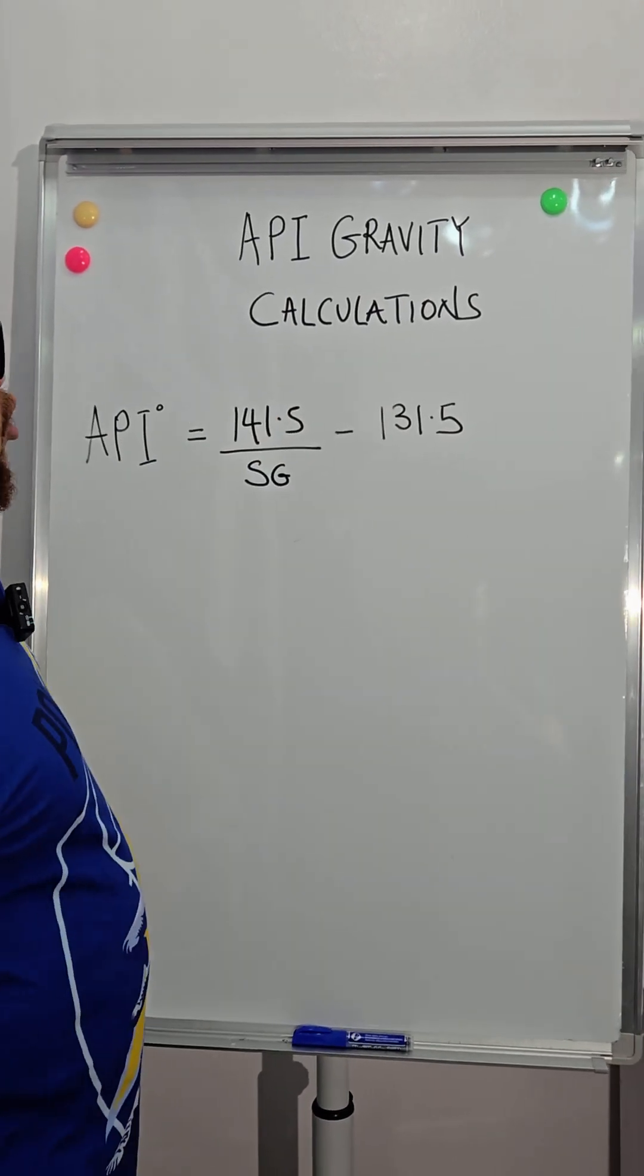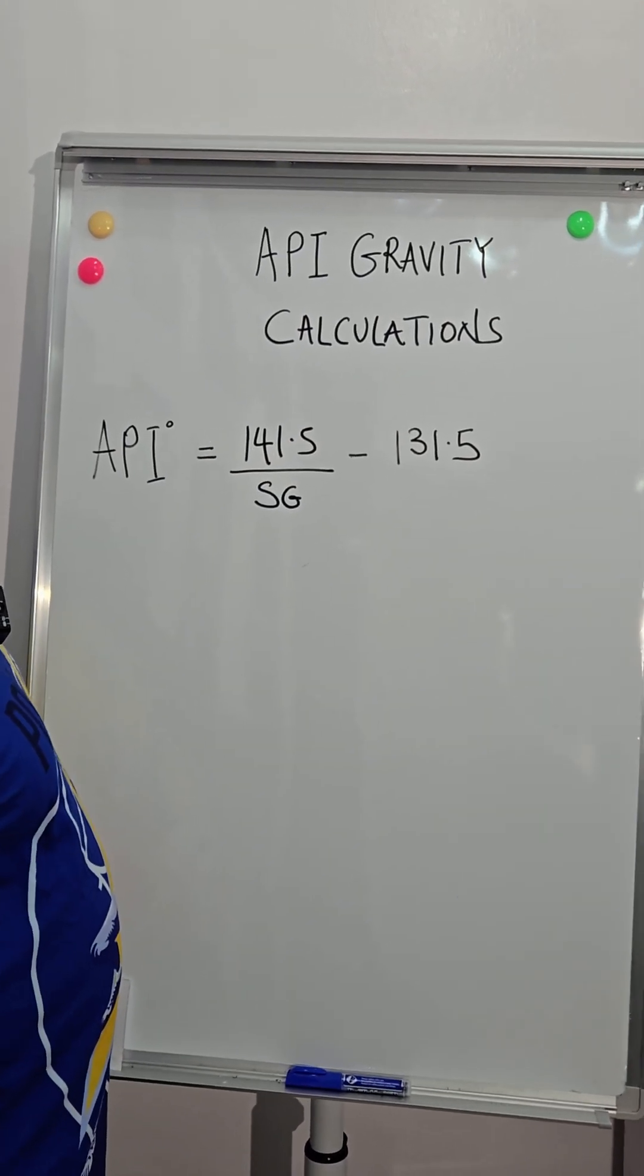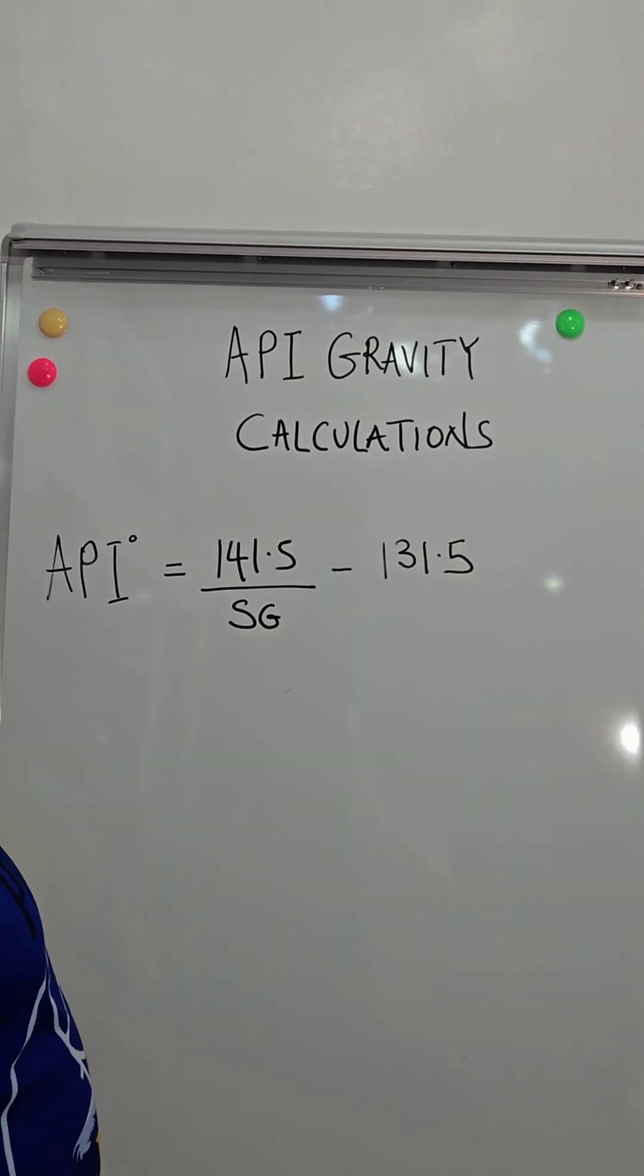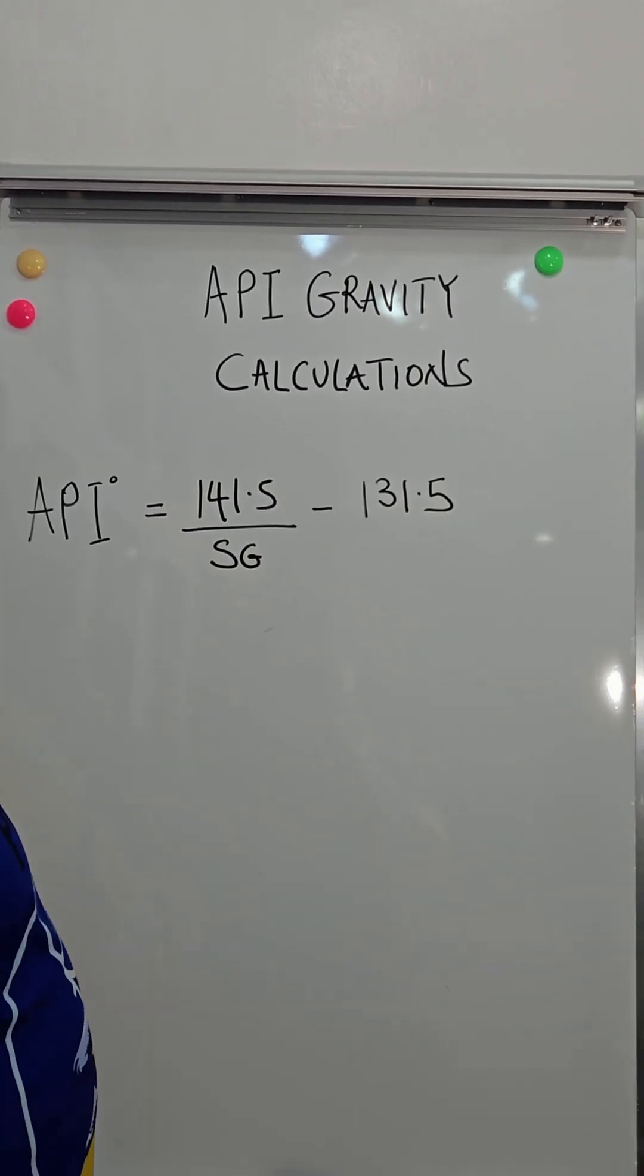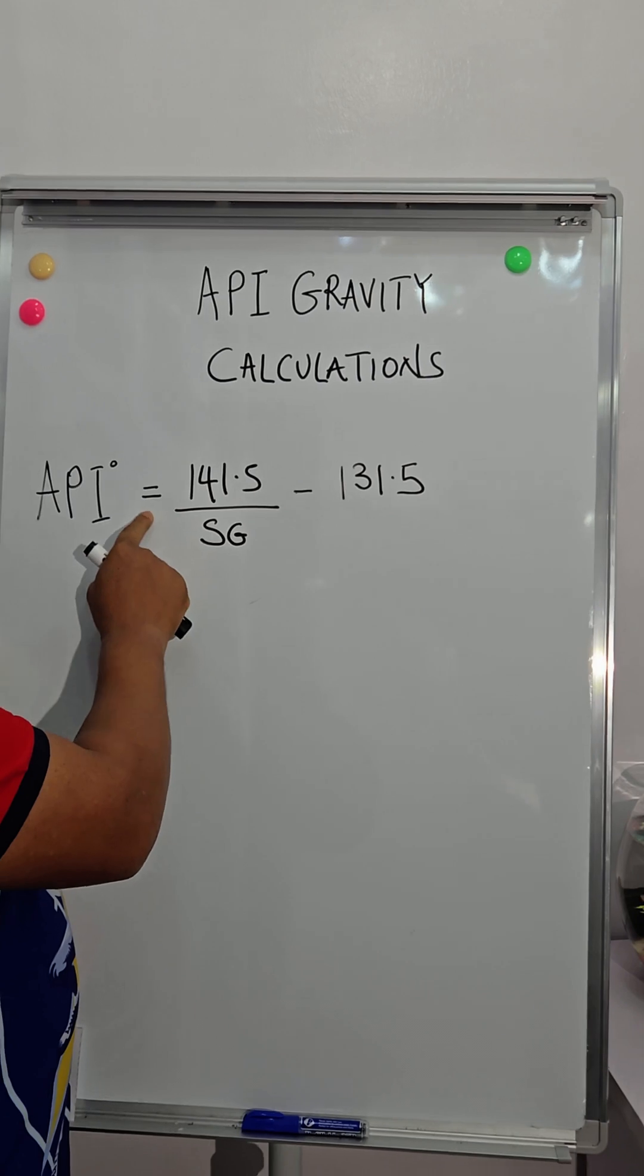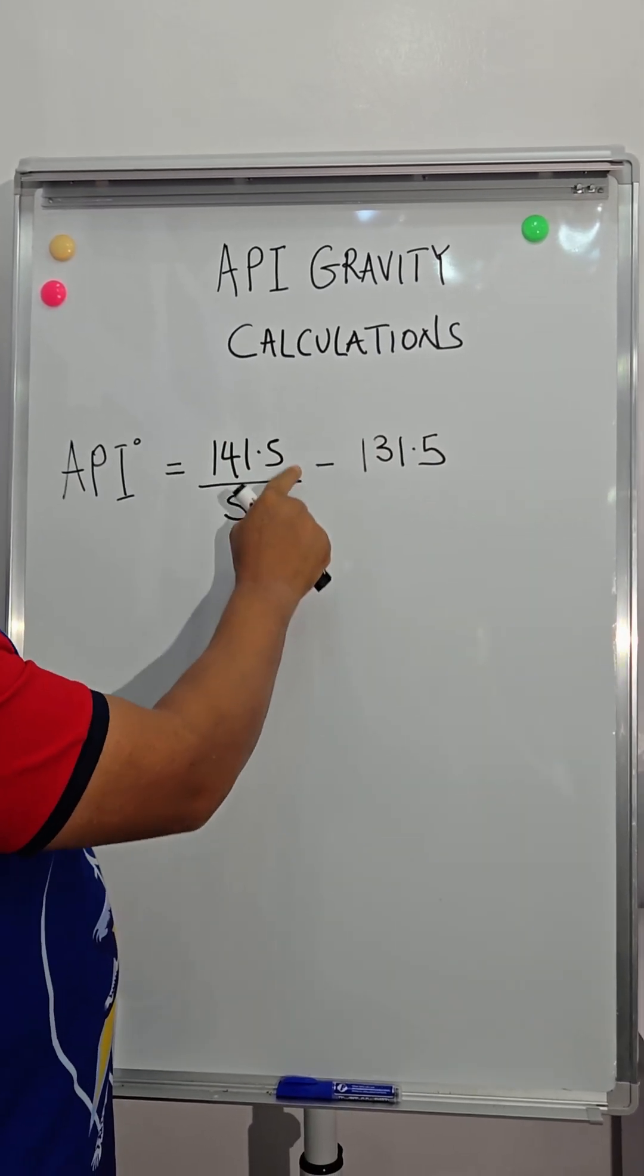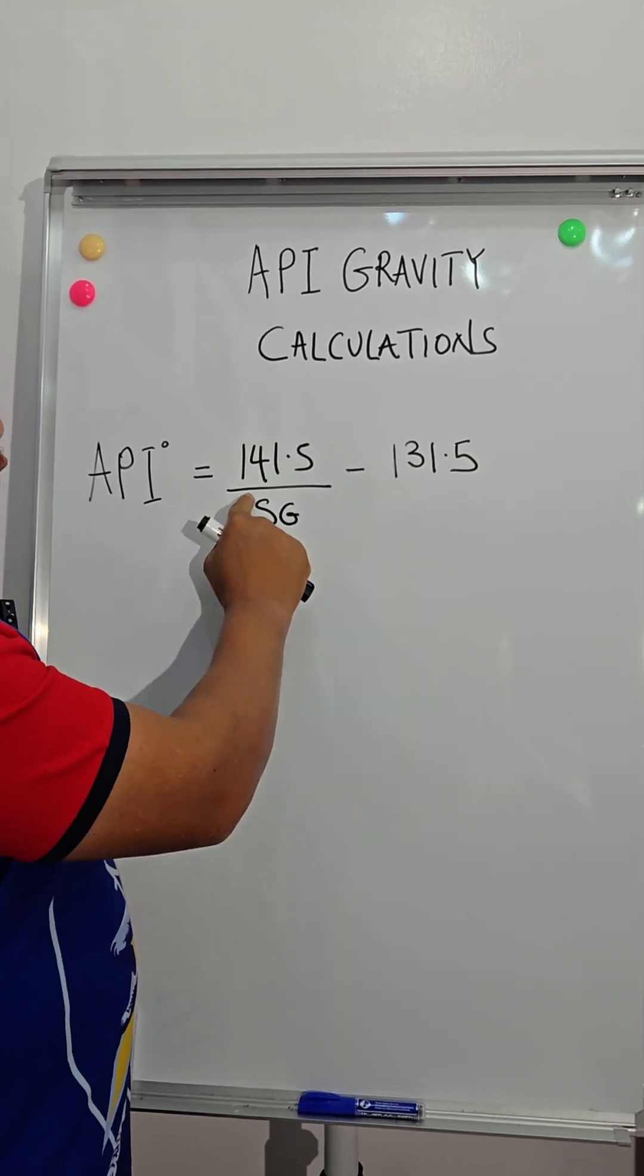So today's topic will be discussing API gravity calculations. This here is typically the formula for calculating API gravity of any fluid. API is equal to 141.5 minus 131.5, but the 141.5 will be divided by the SG of the fluid.